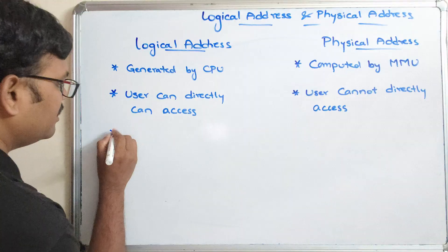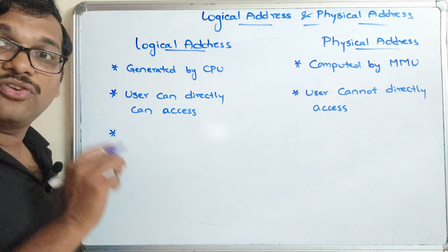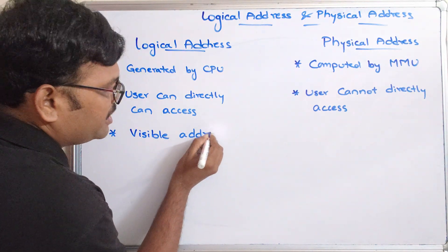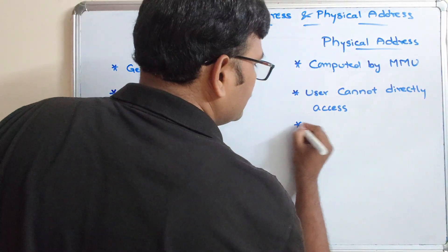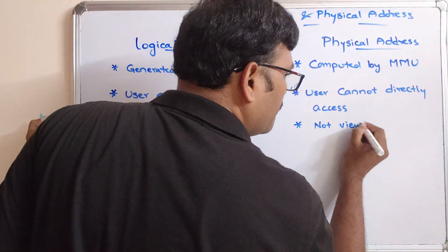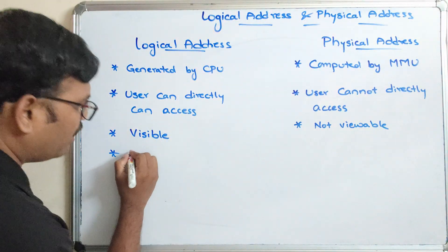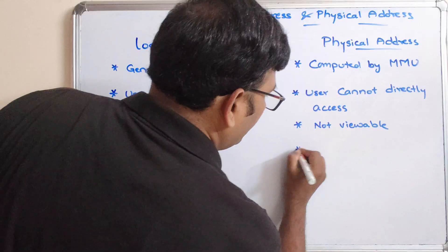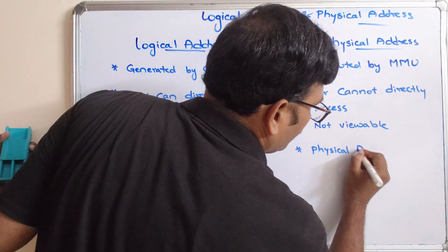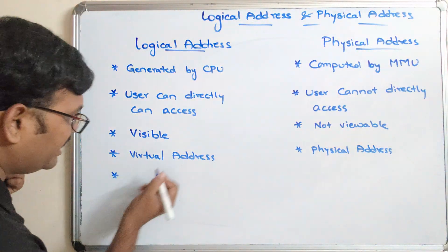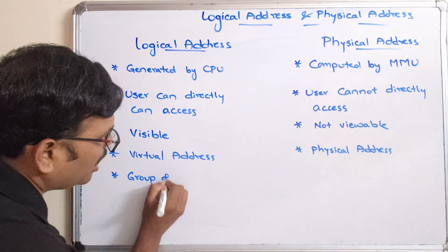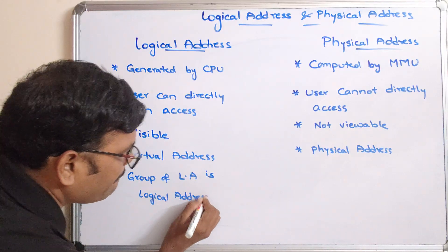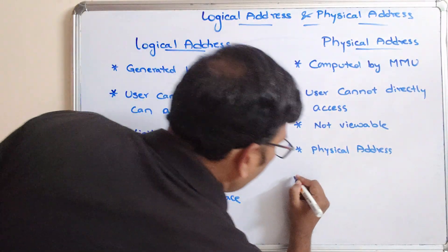The logical address is visible to the user — it is a visible address. The physical address, on the other hand, is not visible or viewable by the user. The logical address is also called a virtual address. A group of logical addresses forms the logical address space, and a group of physical addresses forms the physical address space.